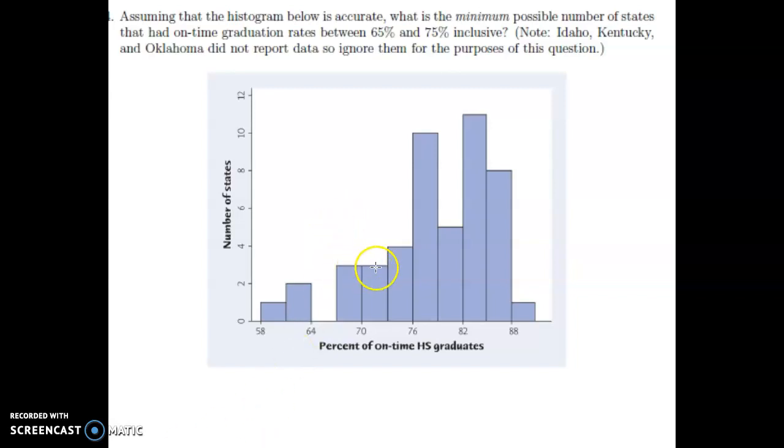Let's look at analyzing a histogram where we have each bar representing a range of values. So first of all is to figure out what range we have going on here. And if we look, we have 58, then 64, then 70, then 76, 82, 88.